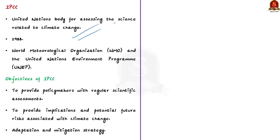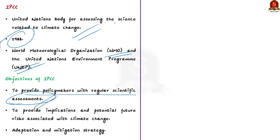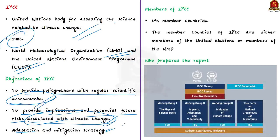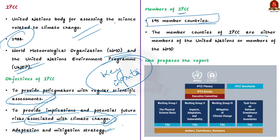When was it created? It was created in 1988 by the World Meteorological Organization and the United Nations Environment Programme. The IPCC was created to provide policymakers with regular scientific assessments on climate change. Through these assessments, the IPCC provides the implications and potential future risks associated with climate change, and puts forward adaptation and mitigation options available for governments around the world. Also note that the IPCC reports are a key input to international climate change negotiations. Currently the IPCC has 195 member countries, which are either members of United Nations or members of the World Meteorological Organization.